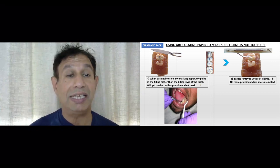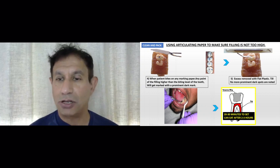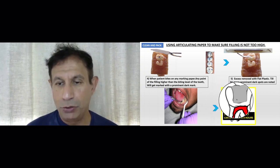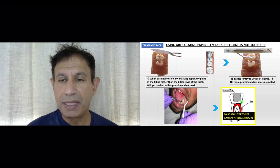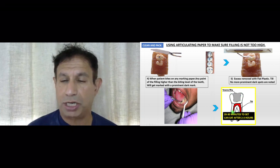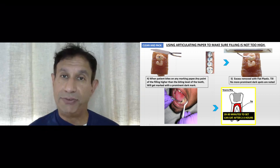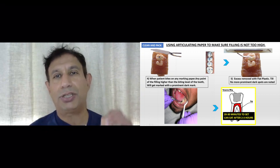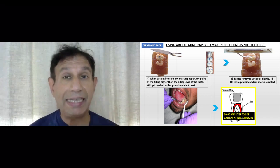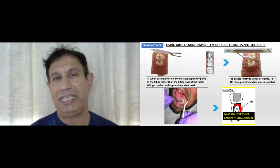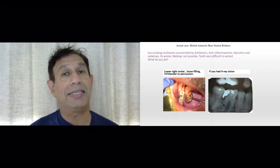In cross-section, the temporary filling material sits adjacent to the tooth structure with the nerve below. This filling will take 20 to 30 minutes to set, and the patient can eat after two to three hours.